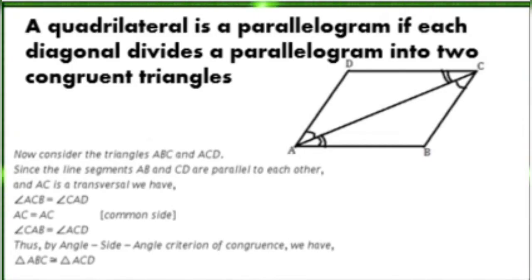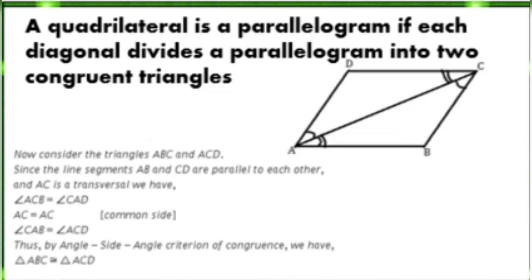By the angle-side-angle criterion of congruence, triangle ABC is congruent to triangle ACD. Therefore, quadrilateral ABCD is a parallelogram.